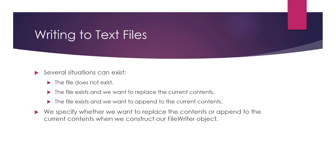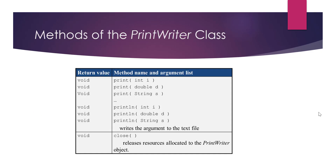So we specify whether to replace or append to the current contents of the file when constructing our FileWriter object using the mode boolean variable. Once we have our PrintWriter object ready with the FileWriter mapped to it, we can use methods to write to the file. The print method takes an integer and returns void, adding that value to the file. We can also pass a double or string. PrintLine is similar to System.out.println — it prints at the current line and then moves the writer to the next line.